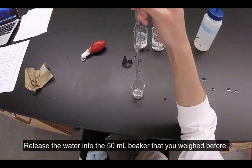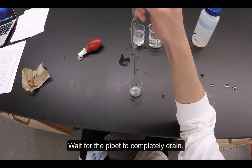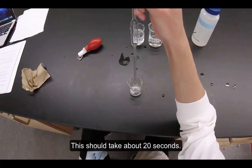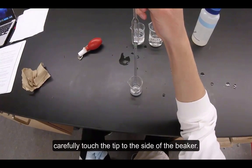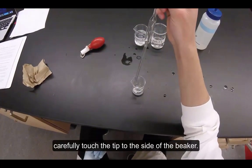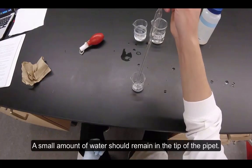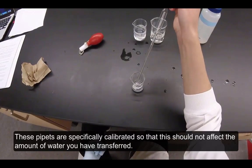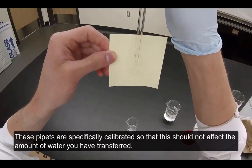Release the water into the 50 milliliter beaker that you weighed before. Wait for the pipette to completely drain. This should take about 20 seconds. After your pipette has completely drained, carefully touch the tip to the side of the beaker. A small amount of water should remain in the tip of the pipette. These pipettes are specifically calibrated so this should not affect the amount of water that you've transferred.